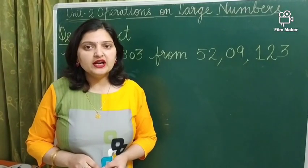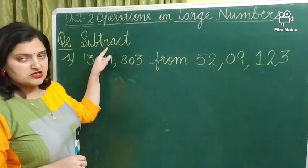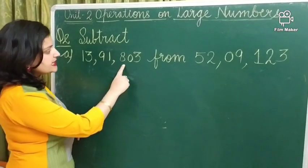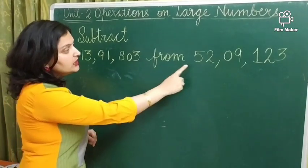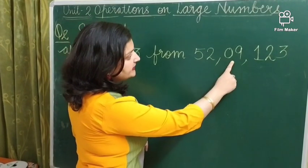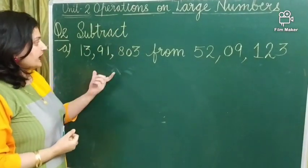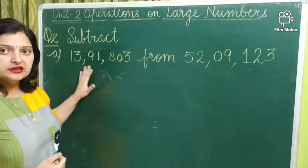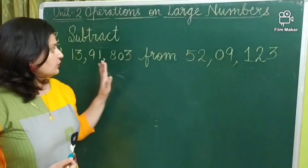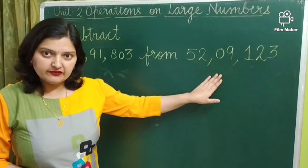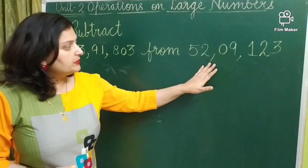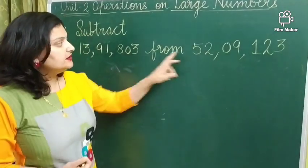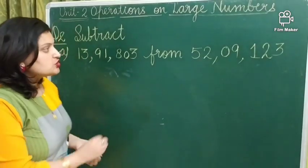Now, moving toward our next operation. That is subtraction. Now, the question is subtract 13,91,803 from 52,09,123. So, here, whenever we do subtraction, we always subtract the smaller number from the bigger number. So, when such type of question is given to you, you have to arrange the numbers. First, we will write the bigger number. So, which one is bigger? This one is the bigger number. So, write it.